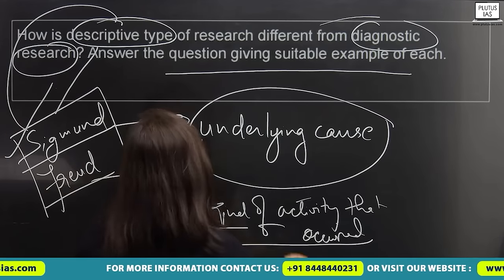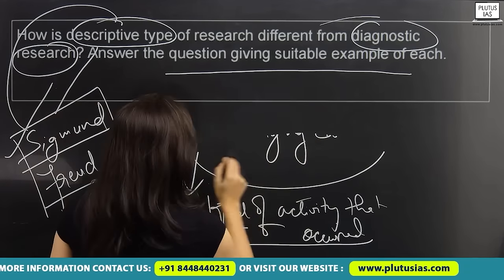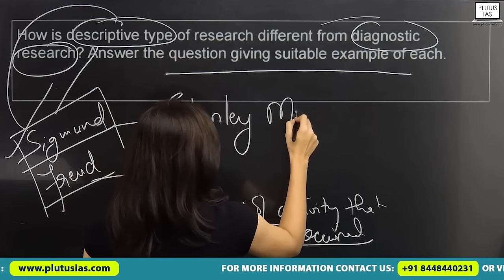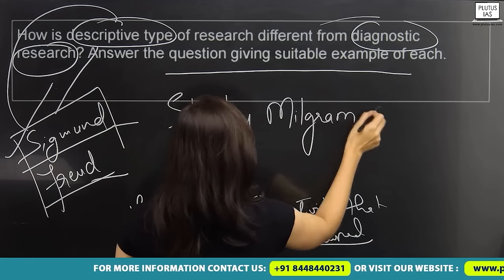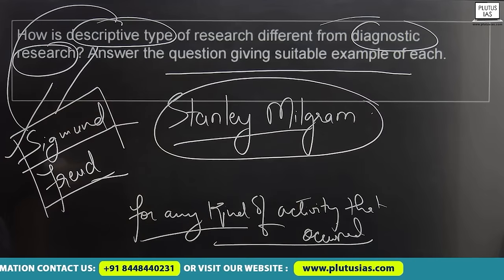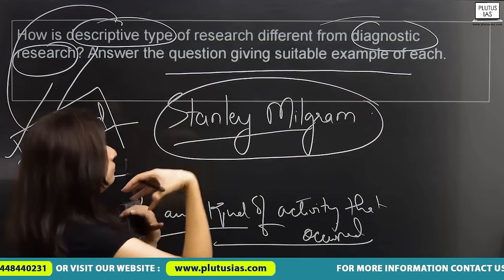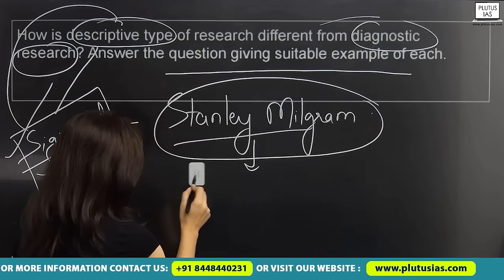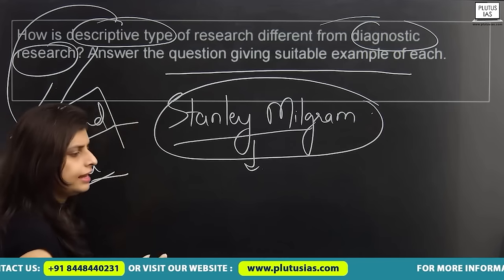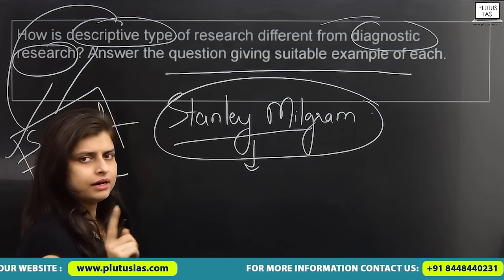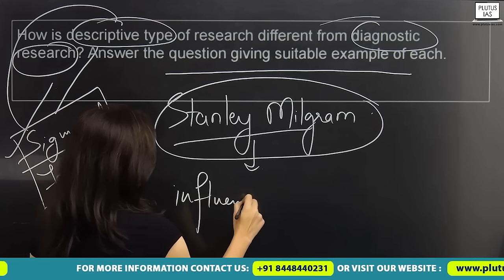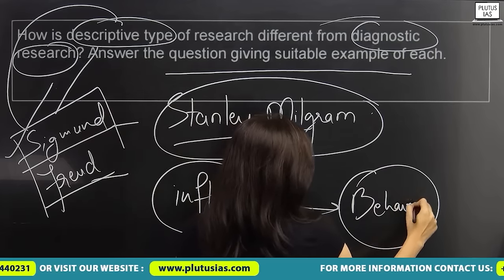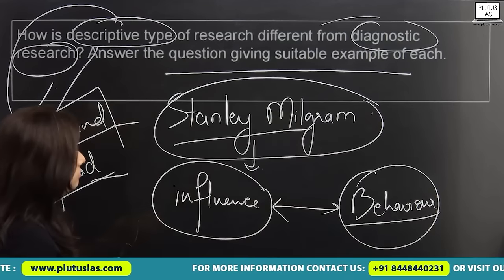You can also talk about Stanley Milgram. Stanley Milgram talked about the influence on anybody based on behavior. So if a person is influenced, that means the influence is caused because of some kind of behavior. So all in all, we have talked about four psychologists.